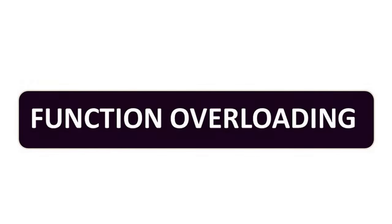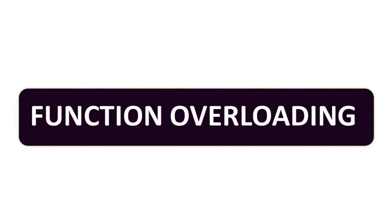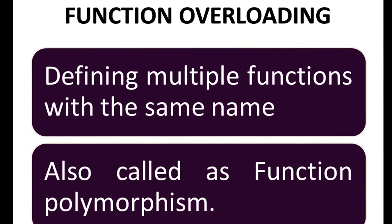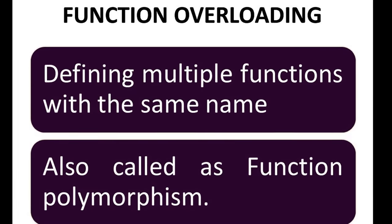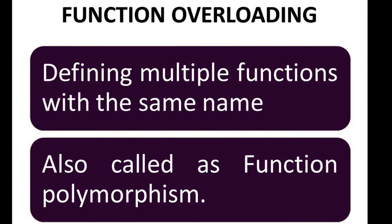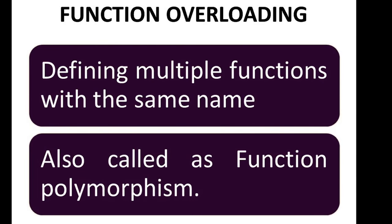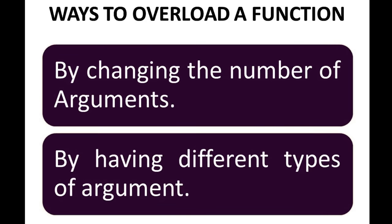This tutorial is about function overloading in C++. C++ allows the specification of more than one function with the same name in the same scope, meaning it is possible to define multiple functions with the same name in the same scope. Function overloading is otherwise called function polymorphism. So, how can this function overloading be done?